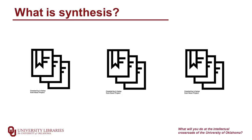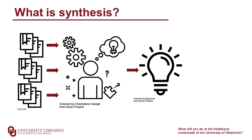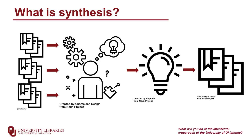Literature reviews do what they say — they review what the scholarly literature says on a given subject. However, to keep this from becoming just a list of facts, you need to synthesize that information to show the reader the patterns that exist. You use this framework of showing the larger patterns to write your synthesis.